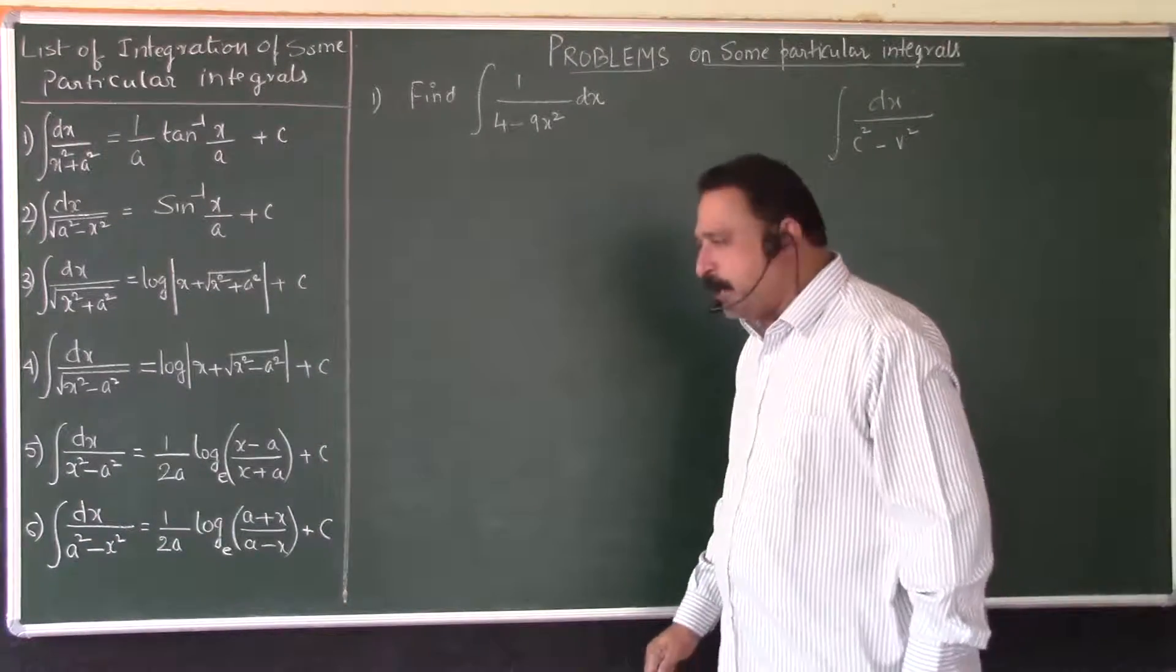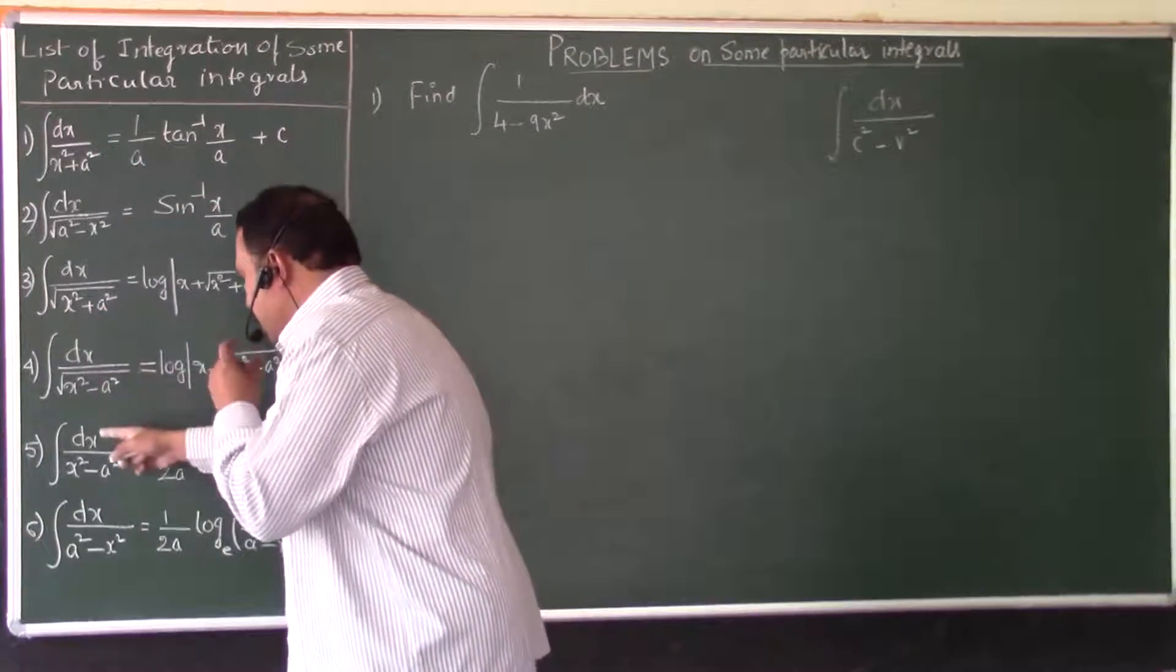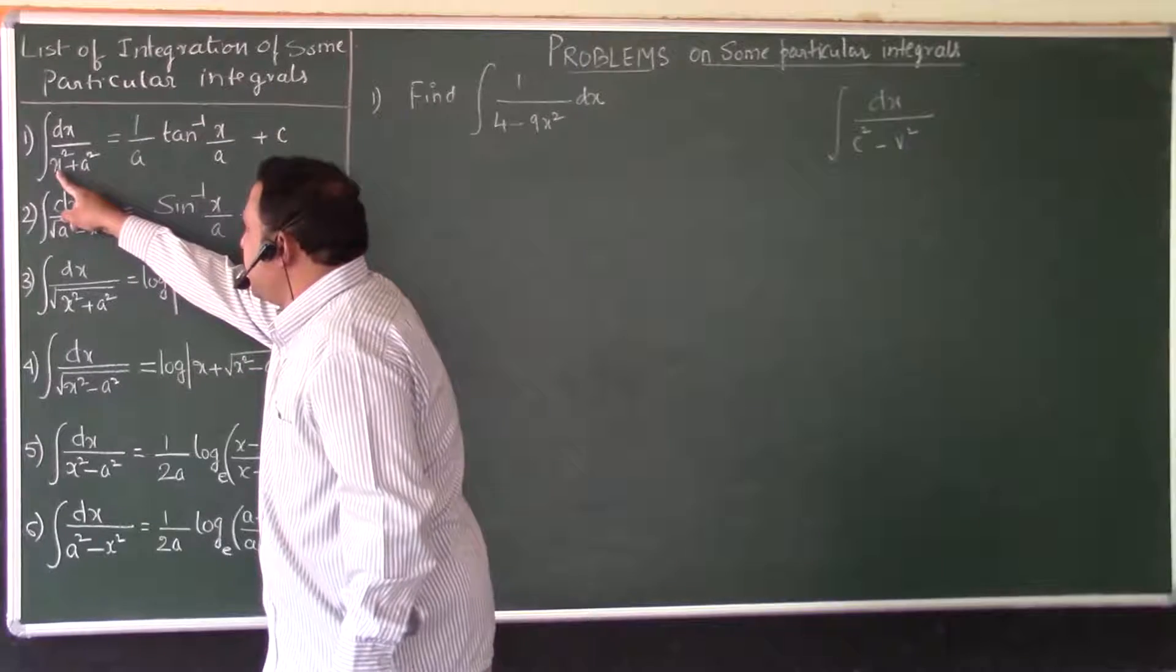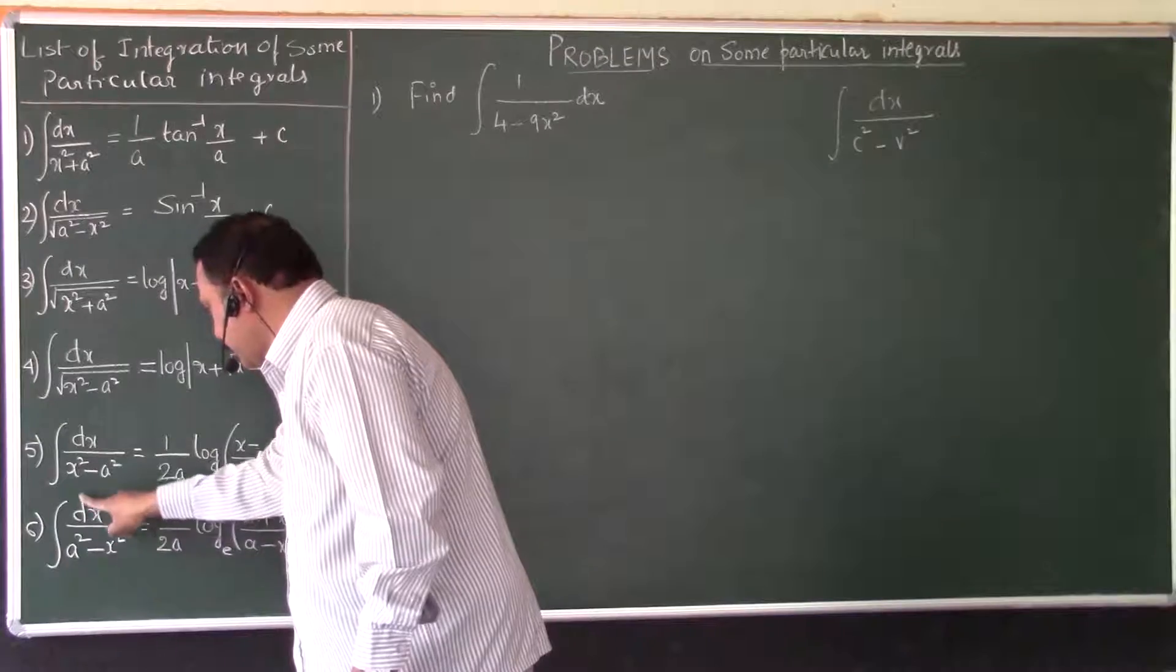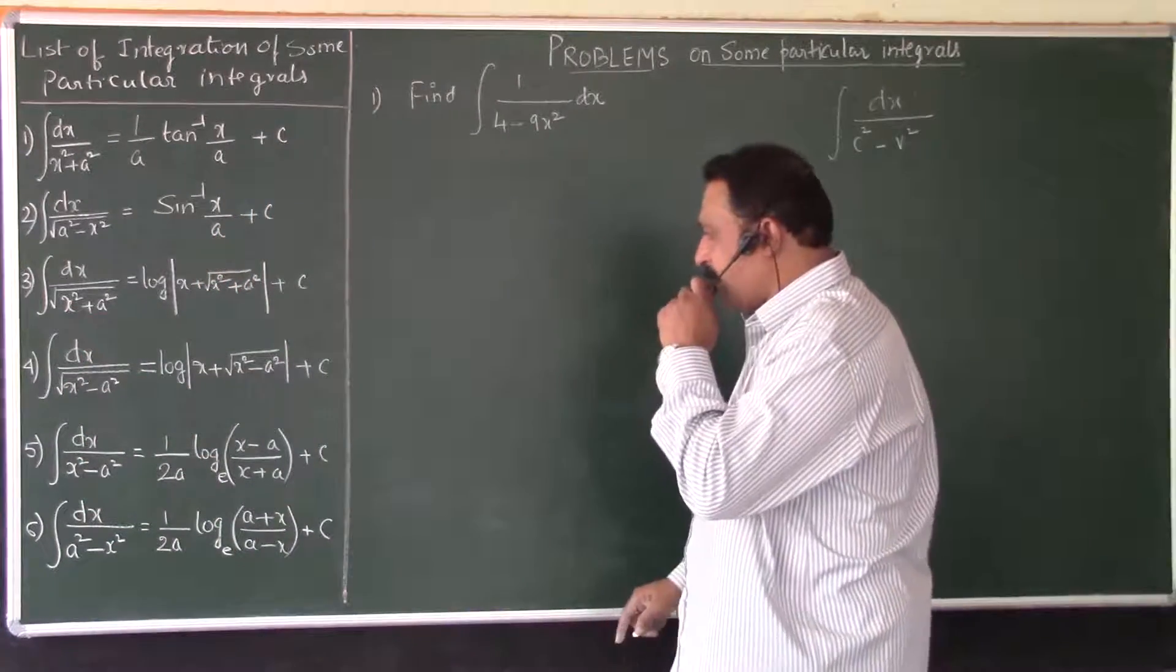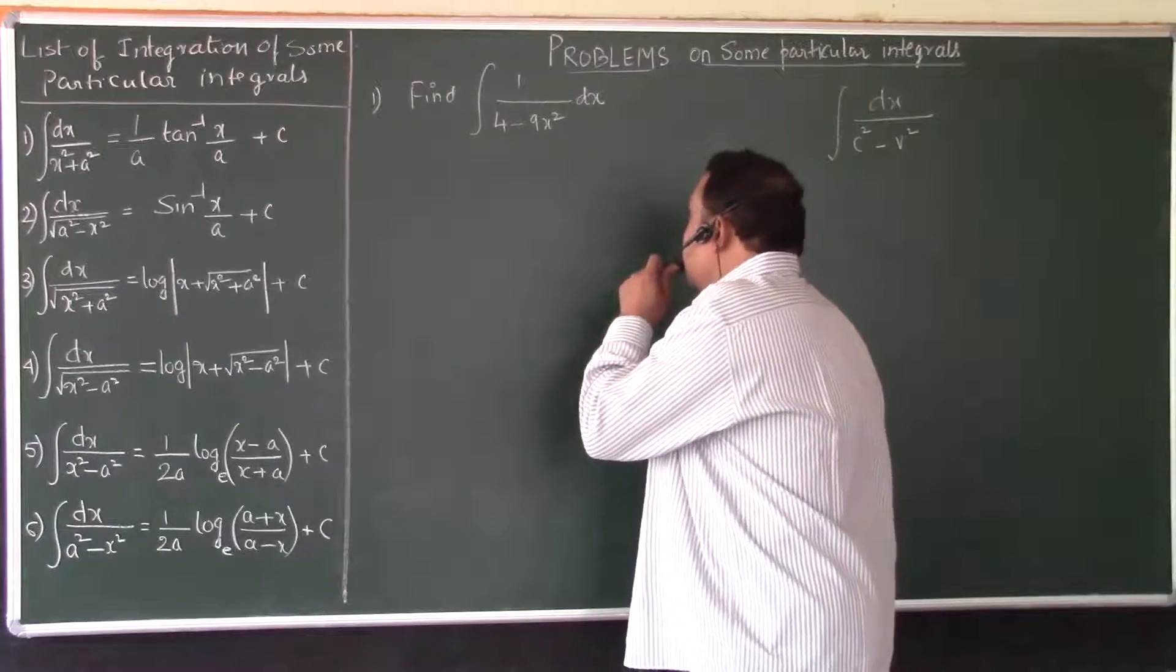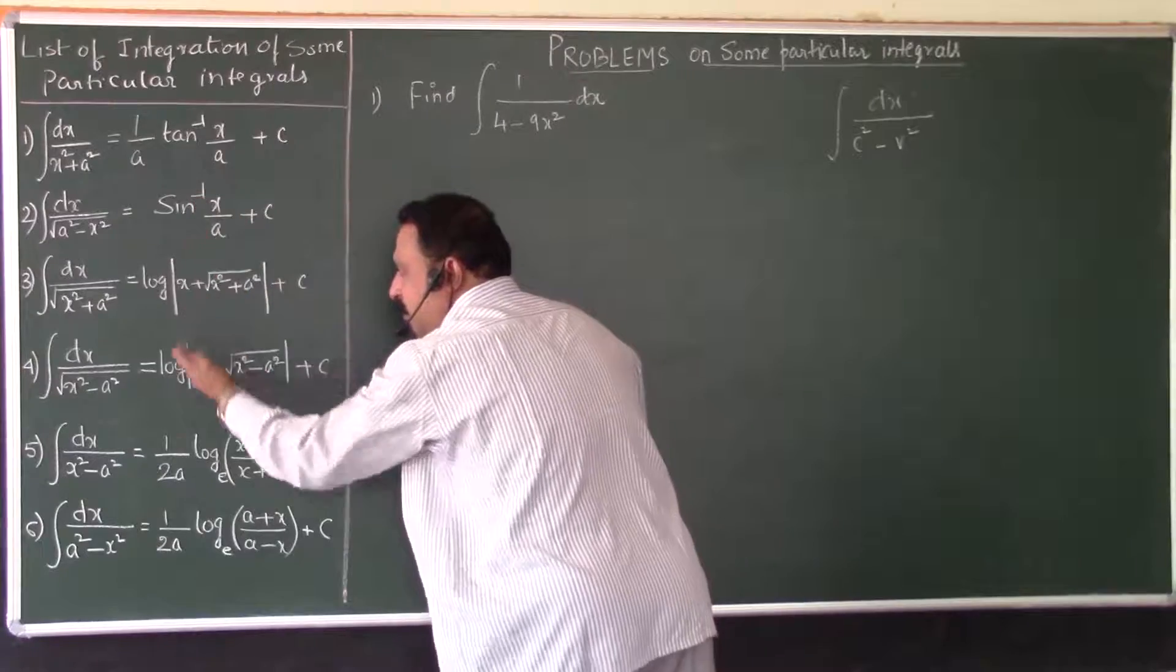But care should be taken to see that in all these particular integrals, the coefficient of x square is 1. What is the coefficient of x square? 1. But here what is the coefficient of x square? 9. So you should first make that coefficient of x square 1 and apply the corresponding results of this list.